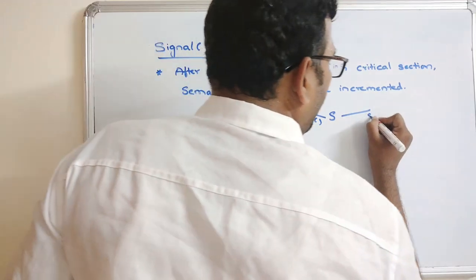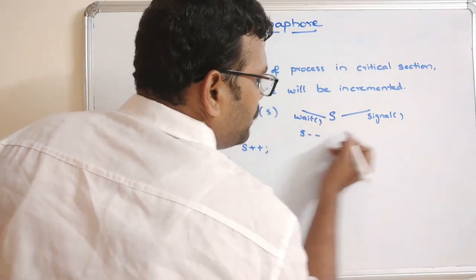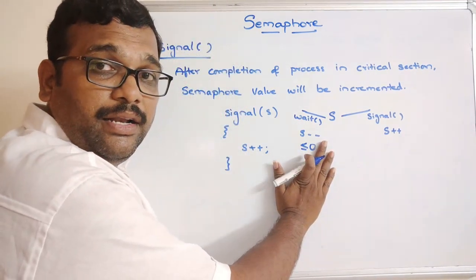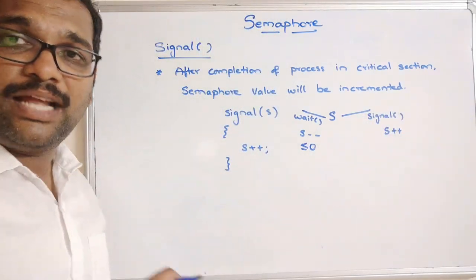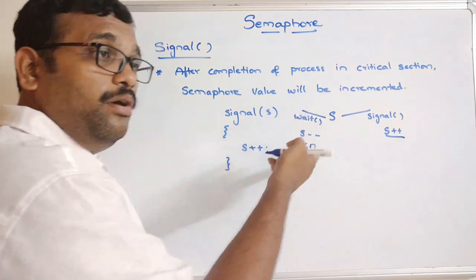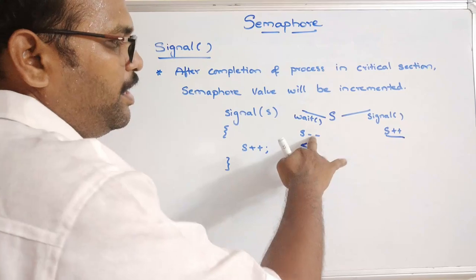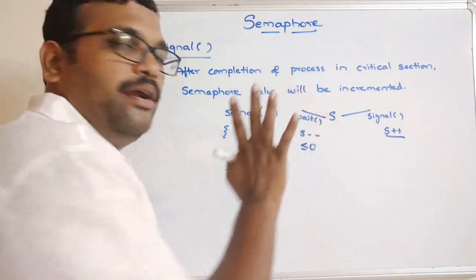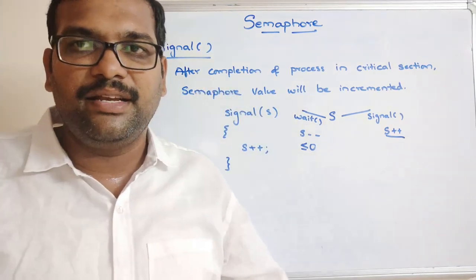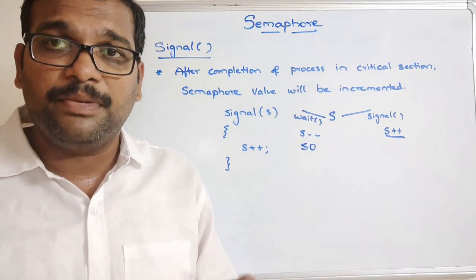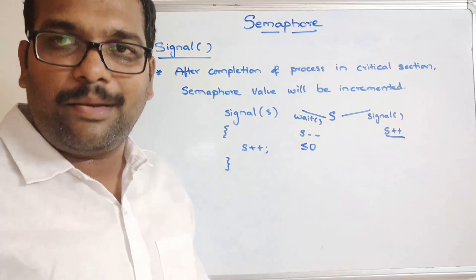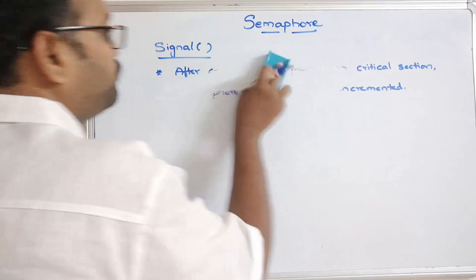In the wait procedure we use decrement (s--) and in the signal procedure we use increment (s++). Whenever s is less than or equal to zero, the process waits until a resource is available. Once s++ is executed and s becomes greater than zero, another process can avail the resource and s will be decremented again. This is how the critical section problem is solved using wait and signal — both of which are atomic procedures.